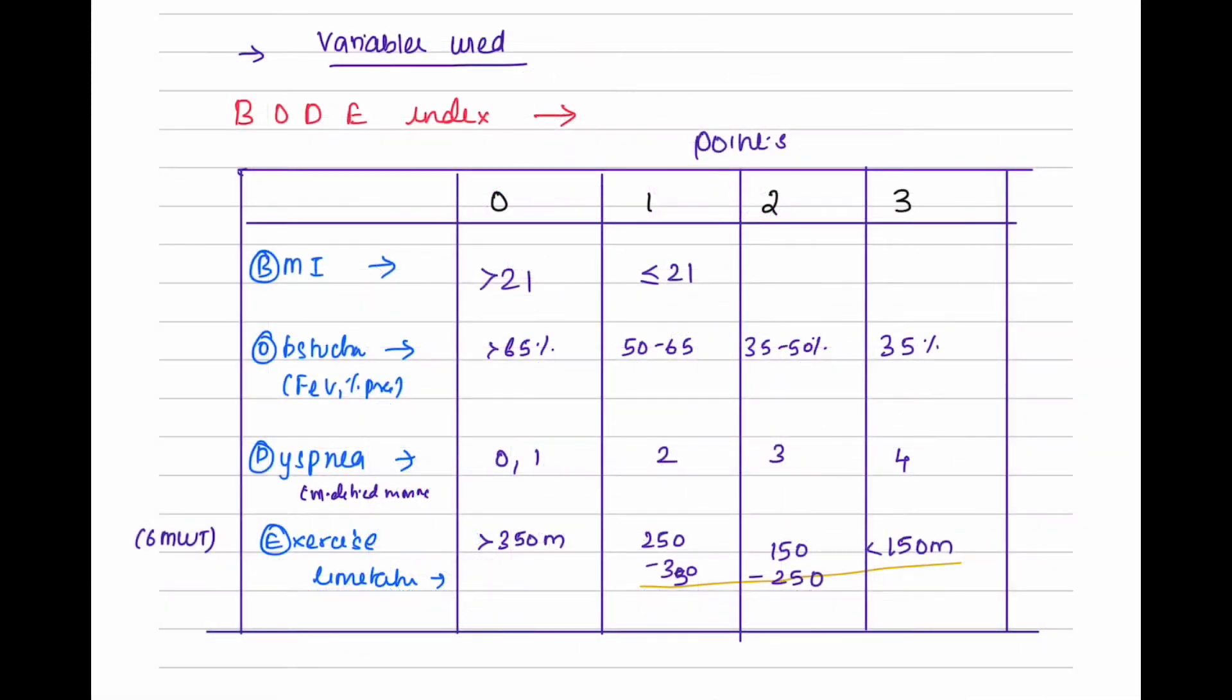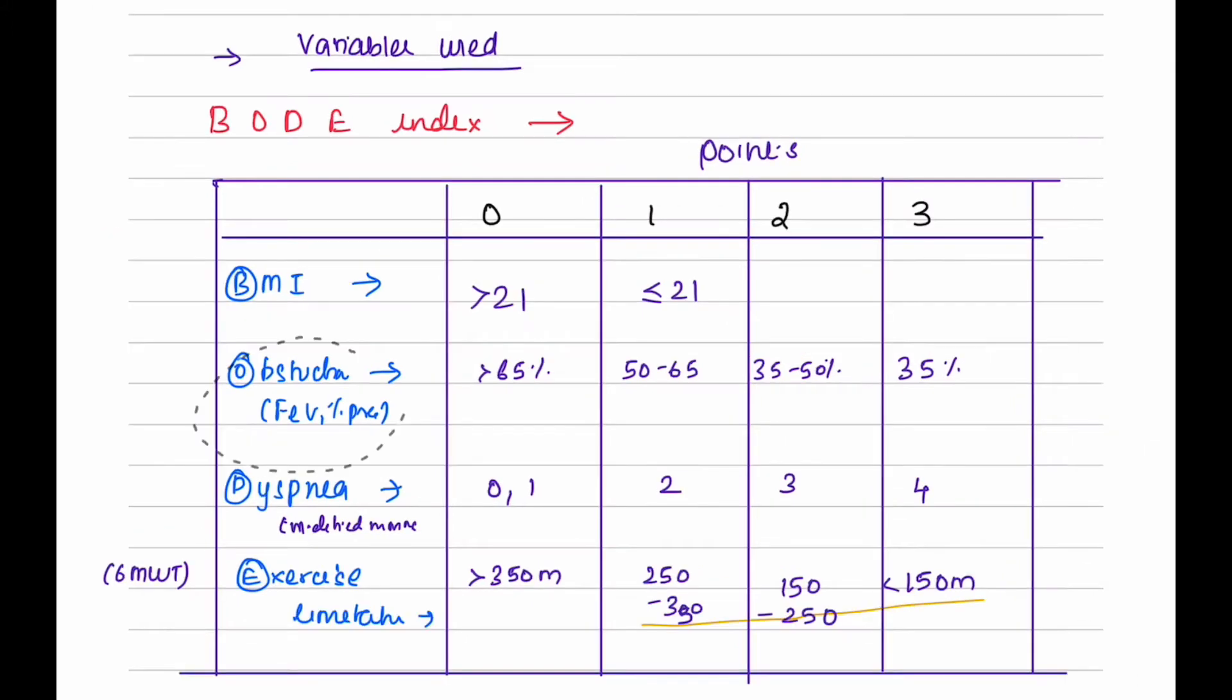The BODE index will result in a score of 0 to 10 dependent upon the body mass index, FEV1 or the first expiratory volume in one second (that is the greatest volume of air that can be breathed out in the first second of a breath), dyspnea based upon the modified mMRC dyspnea scale, and the distance walked in six minutes.